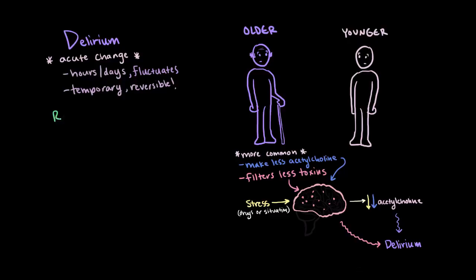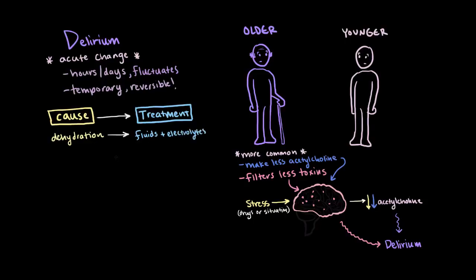Since delirium is, in fact, reversible, it's super important to have properly treated. But the treatment given will depend on the underlying cause. For example, if dehydration is suspected, administering fluids and electrolytes will help correct the problem. Or, alternatively, if drugs are involved, removal of the drugs may help resolve the delirium.